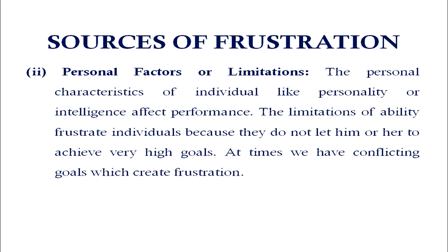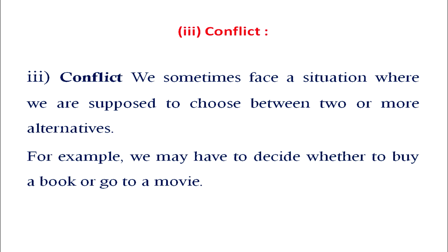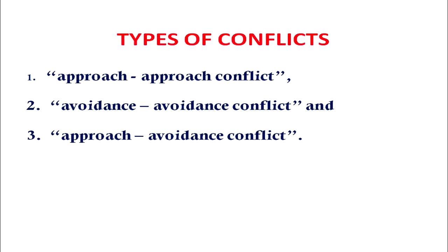The second source is personal factors or limitations. Personal characteristics of an individual like personality or intelligence affect performance. The limitations of ability frustrate individuals because they do not allow him or her to achieve very high goals. At times we have conflicting goals which create frustration. We sometimes face a situation where we are supposed to choose between two or more alternatives — for example, whether to buy a book or go to a movie. There are three types of conflicts: approach-approach conflict, avoidance-avoidance conflict, and approach-avoidance conflict.